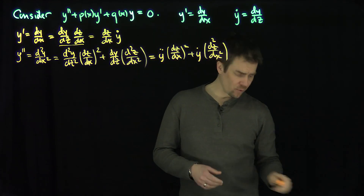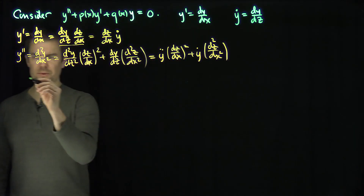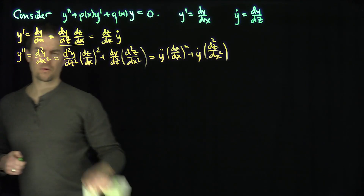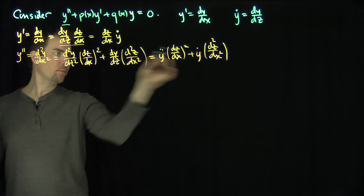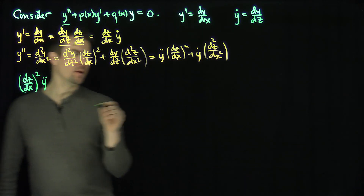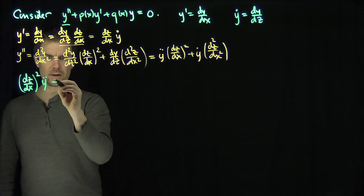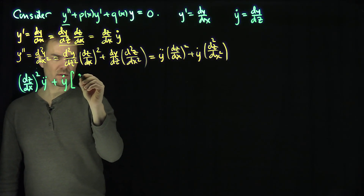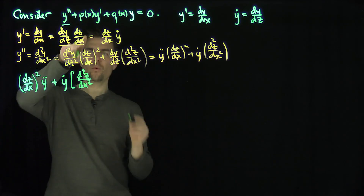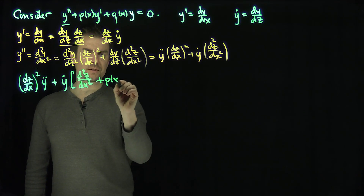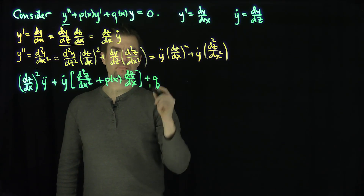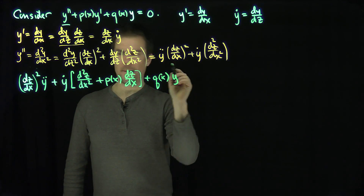So if we replace all the y double primes with dots, we get: (dz/dx)² · y double-dot, then gathering the y-dot terms: y-dot times d²z/dx² plus p of x times dz/dx, and then q of x · y is equal to zero. So I've changed the second-order differential equation into this new form.